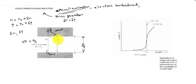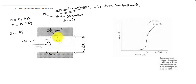After generation, the recombination process occurs — this is the reverse process where the electron comes and occupies a vacancy in the valence band. This is a direct recombination process: the electron from the conduction band comes and occupies a hole in the valence band. During this direct recombination process, a photon of energy may be released. This principle is used in LEDs — the working principle is electroluminescence through direct recombination.